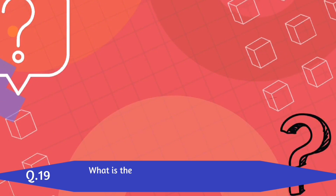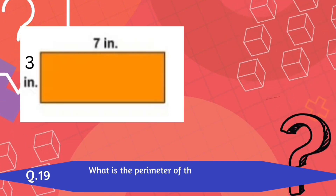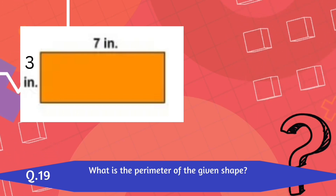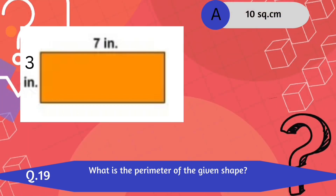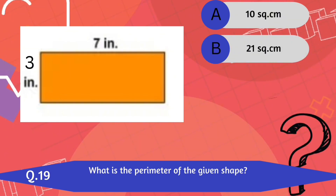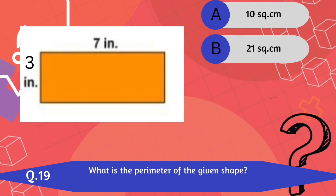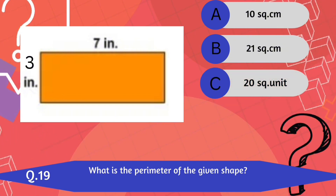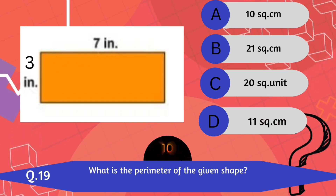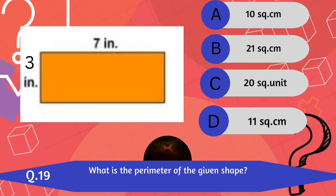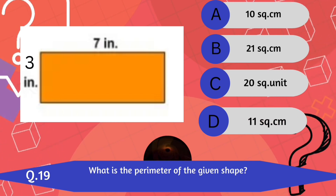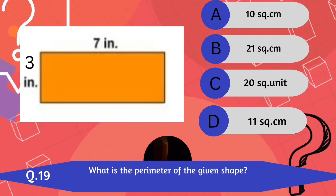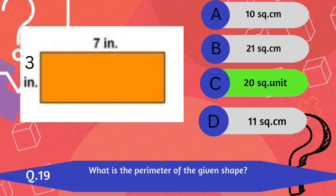Question number 19. What is the perimeter of the given shape? A. 10 square cm. B. 21 square cm. C. 20 square cm. D. 11 square cm. 20 square cm is the correct answer.